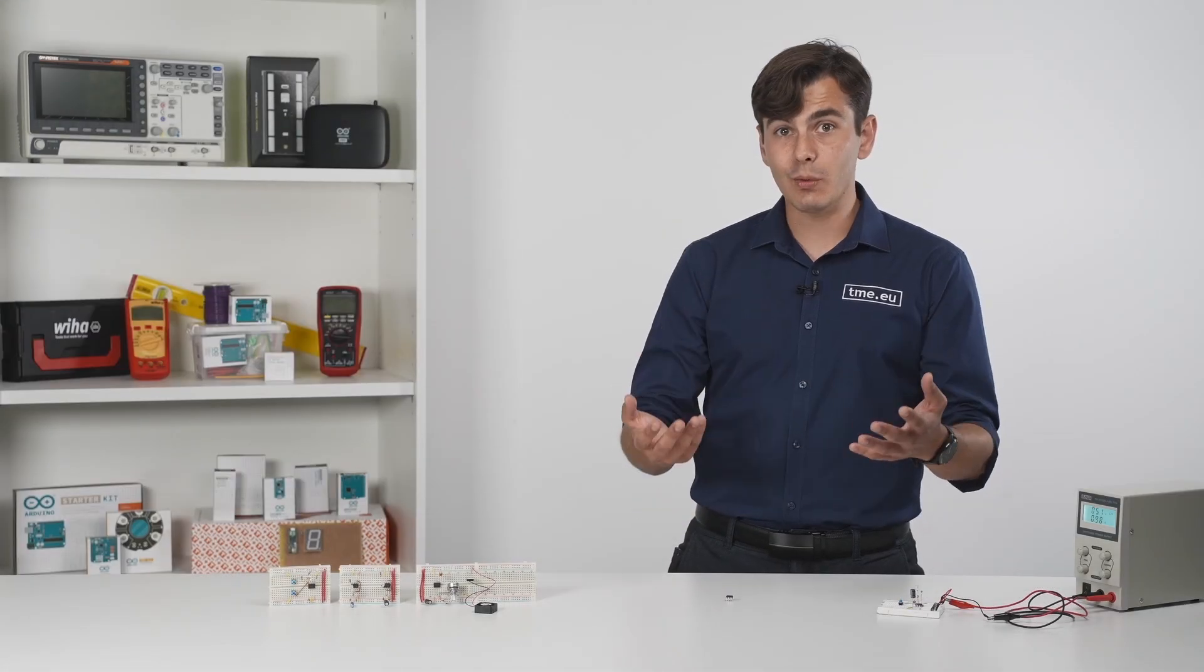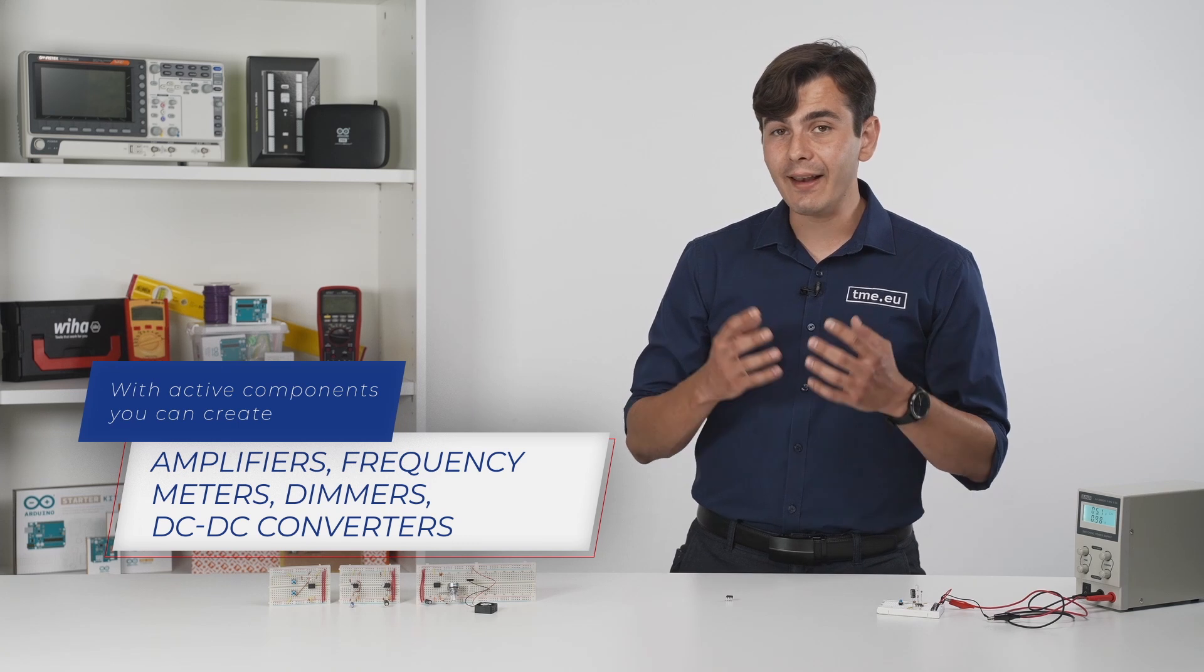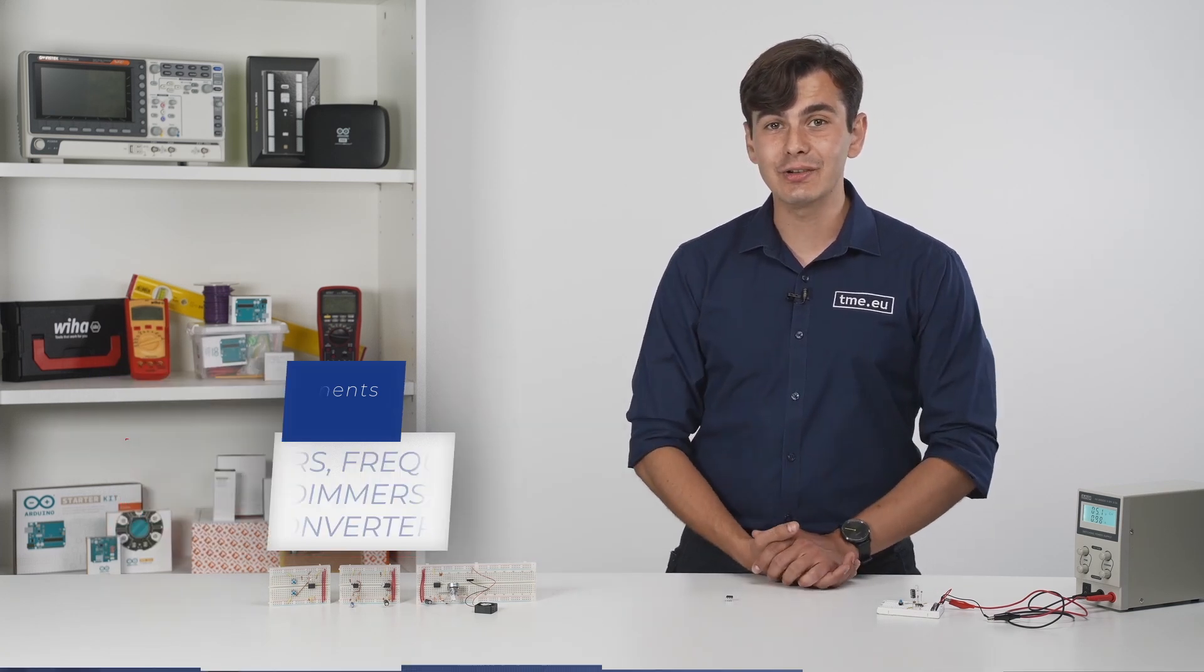Other components like active ones can extend it even more. You can make amplifiers, analog frequency meters, all kinds of dimmers, and DC to DC converters.